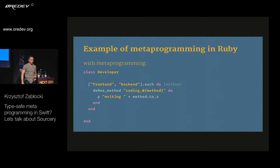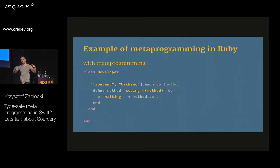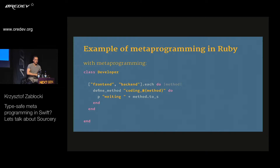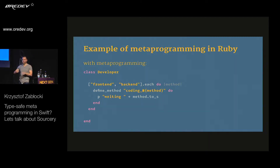There are a lot of benefits to this. If you have a bug in the implementation and you did it manually, you have to find all the scenarios where that code repetition happened and update it because the bug is everywhere. Versus when you use metaprogramming, you write it once, you test it once — if there is a bug you fix it in one place and it's fixed everywhere. A huge benefit obviously.